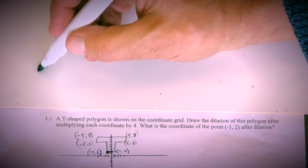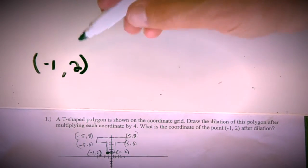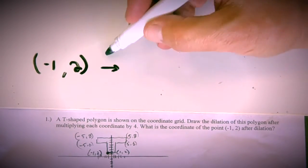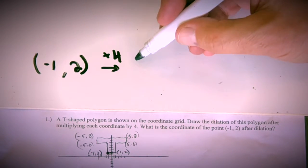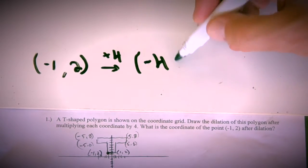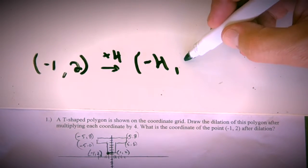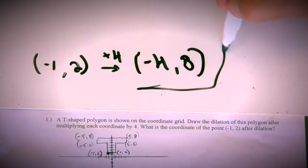So here's (-1, 2) right here. This is the coordinate that you start with. And what's the dilation going to do to it? It's going to multiply by four. So simply take four times negative one, you get negative four. And then the y-coordinate is going to be four times two, which is eight.